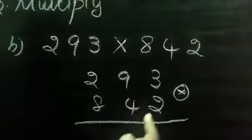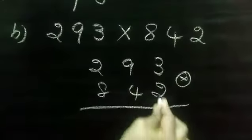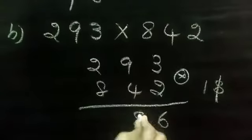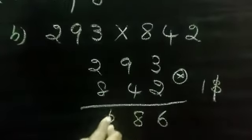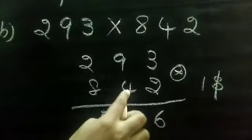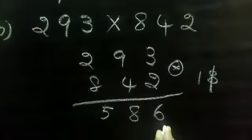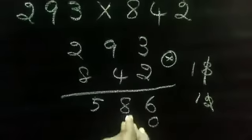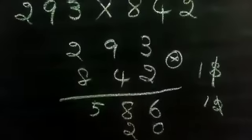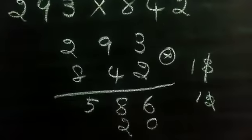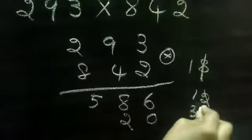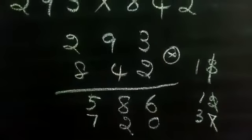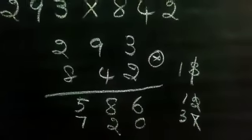First we want to multiply by 2. 2 times 3 is 6. 2 times 9 is 18. So 1 is carry over. 2 times 2 is 4. 4 plus 1 is 5. Next we are going to multiply by 4. So here we want to put 0. 4 times 3 is 12. So 1 is carry over. 4 times 9 is 36. 36 plus 1, 37. 3 is carry over. 4 times 2 is 8. 8 plus 3, 11.